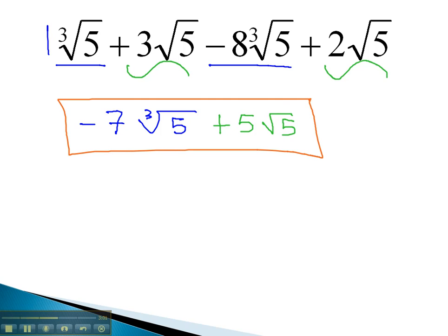As we have seen, radicals that match can be combined, just like combining like terms, by adding the coefficients in front of the radicals.